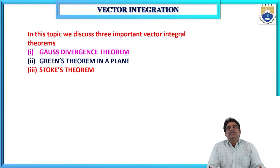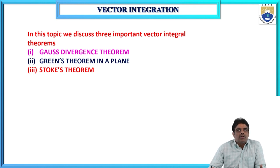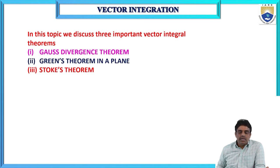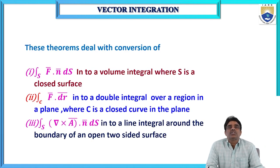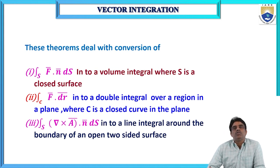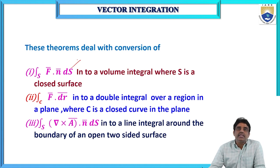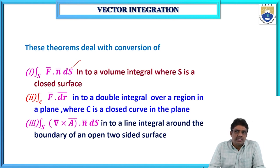In this topic, we discuss the three important vector integral theorems: Gauss Divergence Theorem, Green's Theorem in a plane, and Stokes Theorem. These three are the relation between line, surface, and volume integrals. The first theorem deals with the conversion of integral F̄ · n̄ dS into a volume integral, where S is the closed surface. This is the relation between surface and volume integral — that is the Gauss Divergence Theorem.